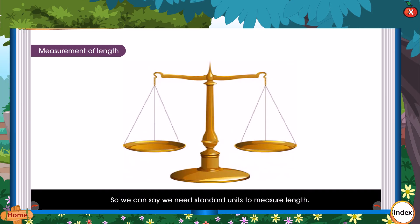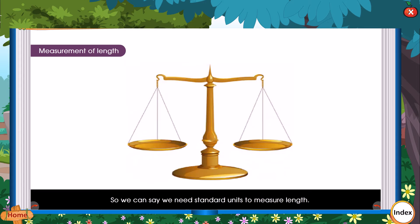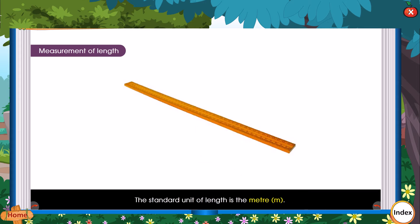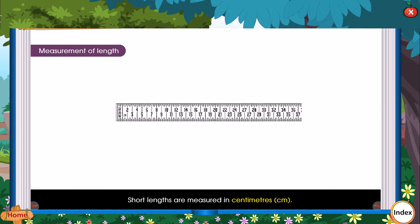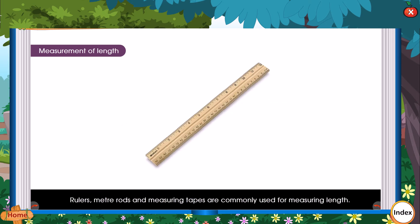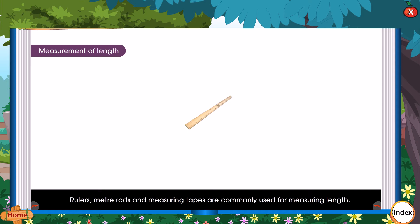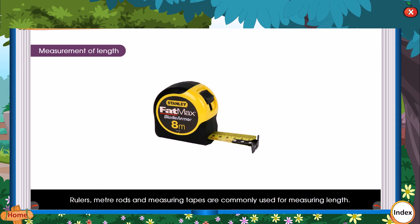So we can say we need a standard unit to measure length. The standard unit of length is the meter. Short lengths are measured in centimeters. Rulers, meter rods, and measuring tapes are commonly used for measuring length.